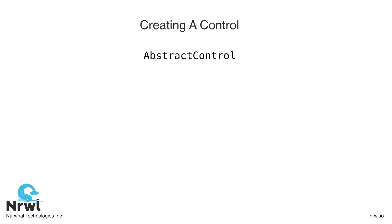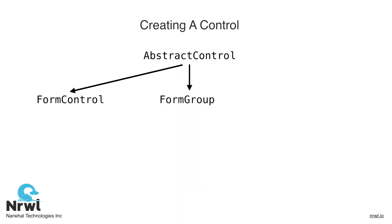All three types of controls extend the abstract control abstract class. These three types are the form control, the form group, and the form array.